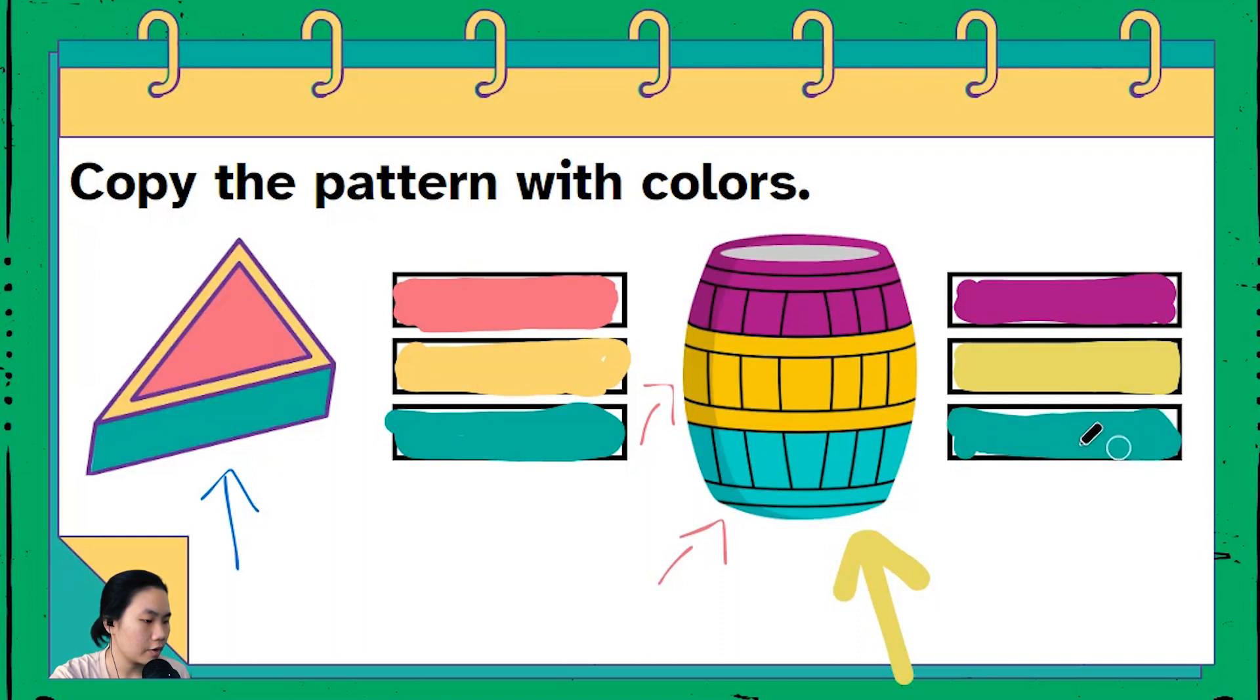So they both have very similar color patterns you know. The triangle has green and yellow. The barrel also has green and yellow. The only difference is that this one is a pinkish red and this one is a deep purple.